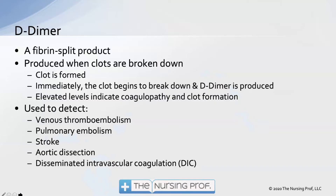D-Dimer is a lab test that is done to find out if we have clots forming in the body. This is an interesting way of detecting clots — we're going to be looking for a product to tell us that clots are being broken down. So if clots are being formed in the body, the body is going to naturally break them down. This is part of the whole inflammatory process: clots are made, and then the clot has to be broken down.